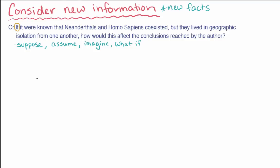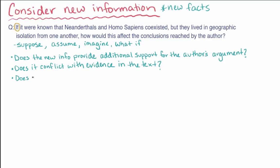Once you read the new information, you'll need to assess how that information might affect the arguments made in the passage. Many of these questions are asking you to think about whether the new information is consistent or inconsistent with the reasoning in the passage. Does the new information provide additional support for the author's argument? Or does it conflict with evidence that is cited in the text? Or does it contradict a conclusion that the author reached? Does it require you to refine or specify part of the argument made by the author?